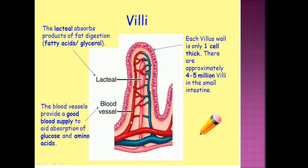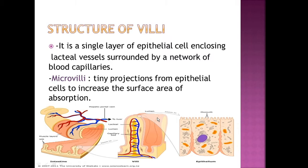Each villus wall is only one cell thick. There are approximately 4 to 5 million villi in the small intestine. The structure of the villi is a single layer of epithelial cells including the lacteal vessels, surrounded by a network of blood capillaries. These are the microvilli — small, tiny projections from the epithelial cell to increase the surface area for absorption.